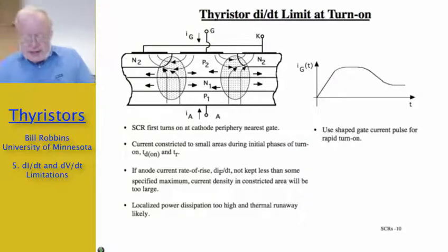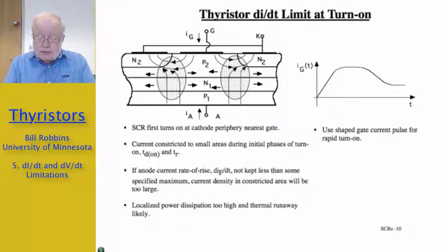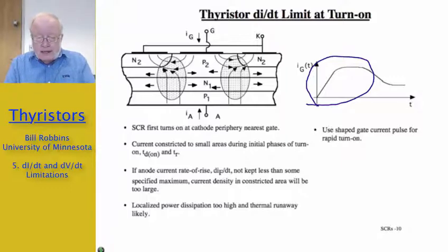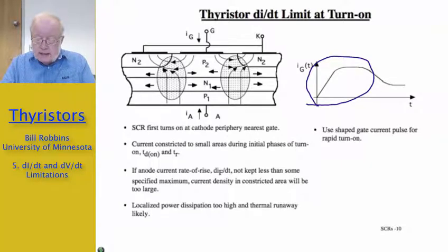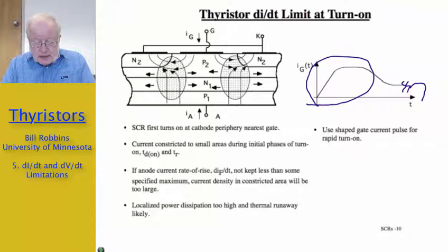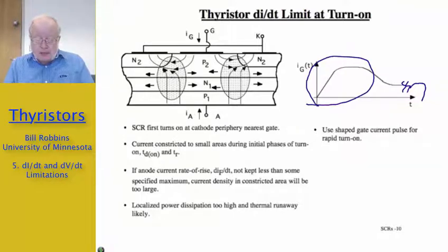Typically, what we do as we turn on this device is to initially apply a very large and fast-rising gate current pulse, but only for a relatively short period of time, so that we get the device turned on and the excess carriers starting to spread laterally. At that point, the current is probably getting substantially large, so we need to back off on the gate current so that we're not turning it on too quickly, then maintain a lower value for a longer period of time. By this means we can keep the device from having too high a localized power dissipation and thus the possibility of thermal runaway. The device manufacturer usually specifies what that maximum DI/DT limit is.